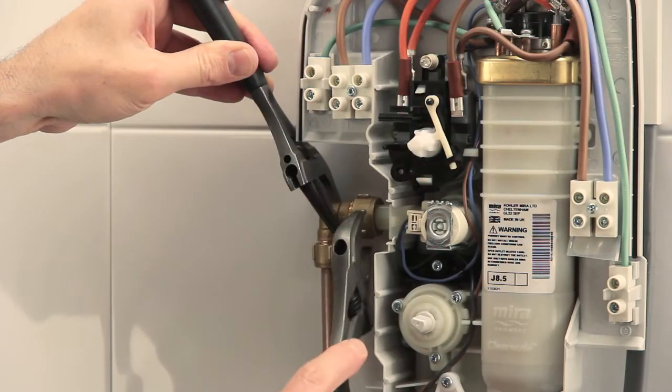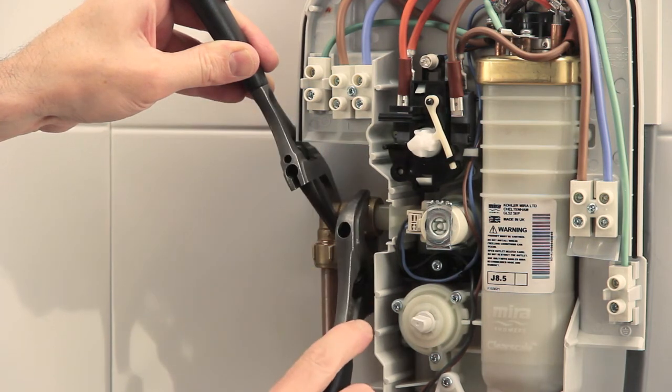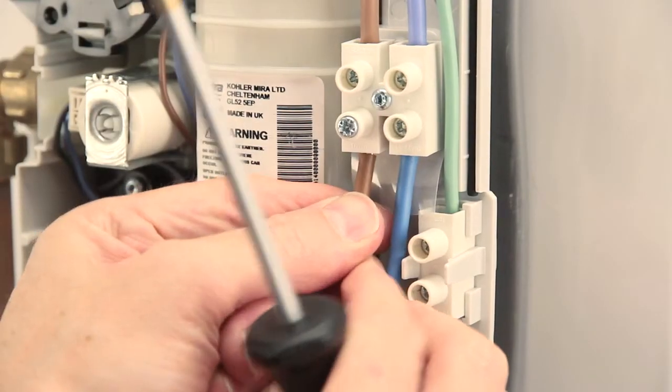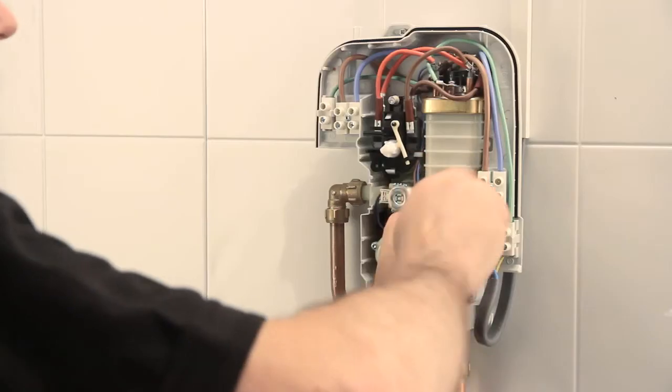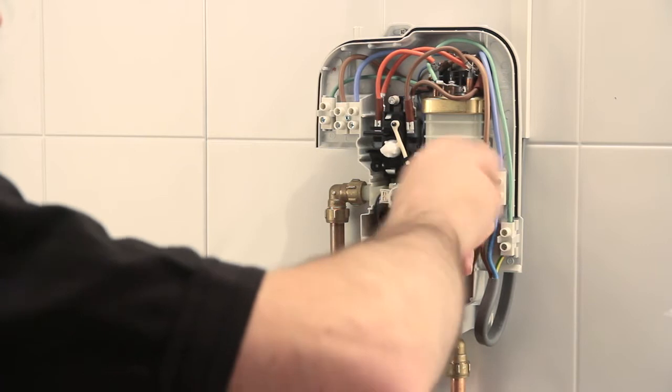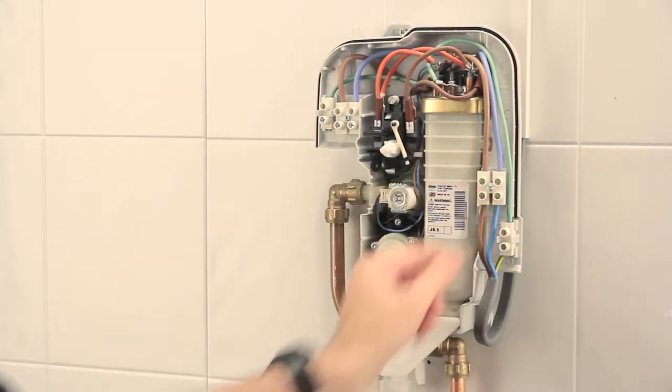Fully tighten the water connection and turn on the water supply to check for leaks. Insert the wires into the terminal block, in this instance on the right. Tighten the screws and make sure that the connections are fully secured.